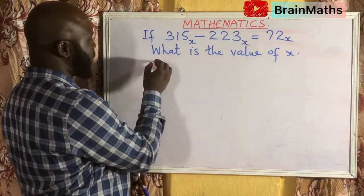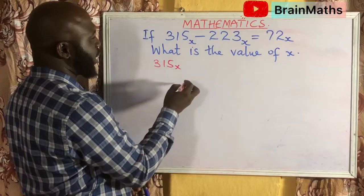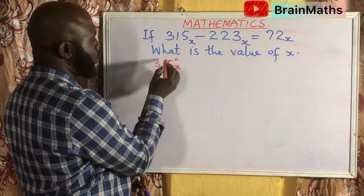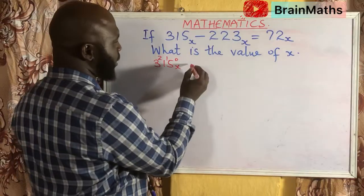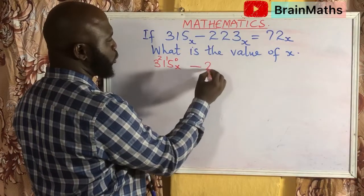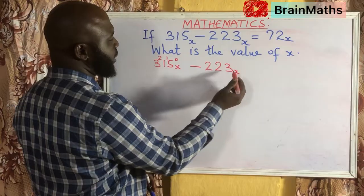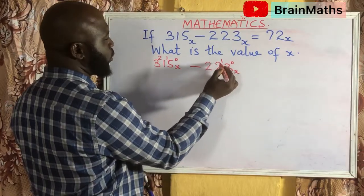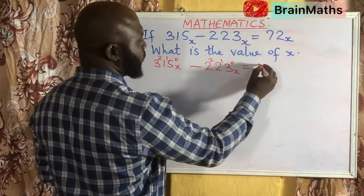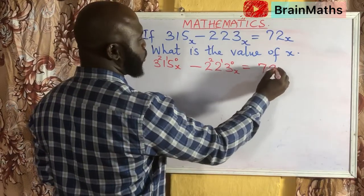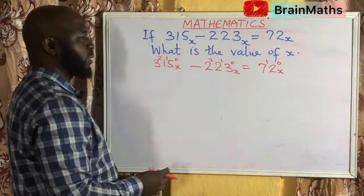We have 315 in base X — with powers 0, 1, 2 — minus 223 in base X with powers 0, 1, 2 as well, which is equal to 72 in base X also having their respective powers.